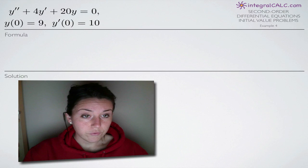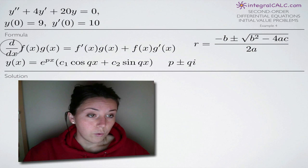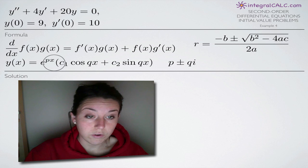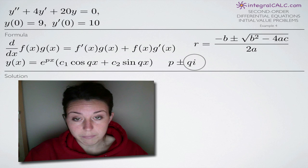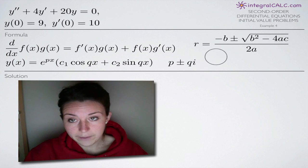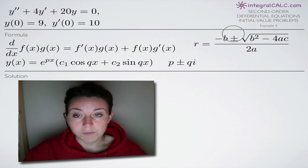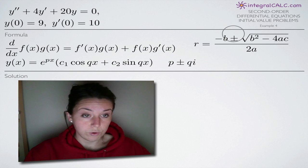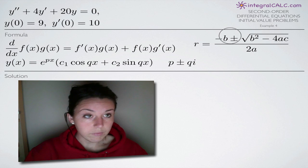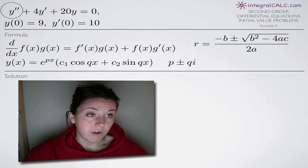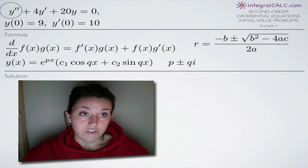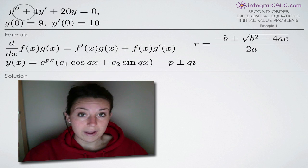So we're going to need a couple of formulas first. We'll need the product rule later on. This is the second order differential equations formula that we'll need, and it's a two-part formula that also involves p plus or minus qi. And then we'll need the quadratic formula in order to solve for our roots. So the first thing we want to do is convert our original function that involves the variable y to an equation that involves the variable r, so we're going to be replacing y's with r's.